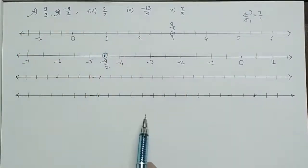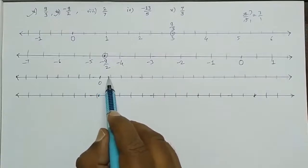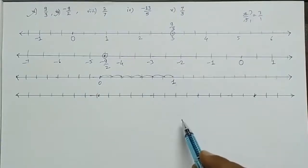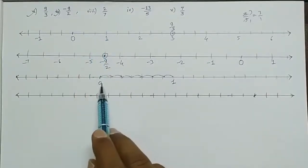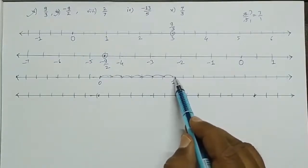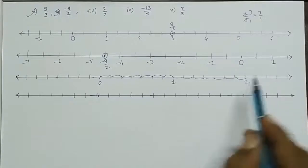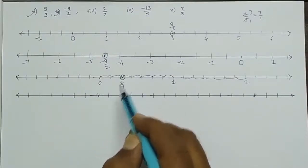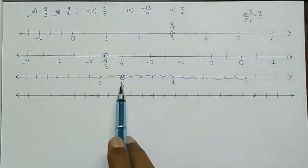Next: 2 by 7. We need 7 equal parts of 1 unit. Take 0, mark 7 divisions to reach 1, then 7 more to reach 2, and similarly for negative side. From 0 going positive: 1 by 7, 2 by 7. So 2 by 7 is at the second mark from 0. We need to just draw the number line, make as many equal parts as the denominator, set 0 then 1 then 2, then locate the given number.